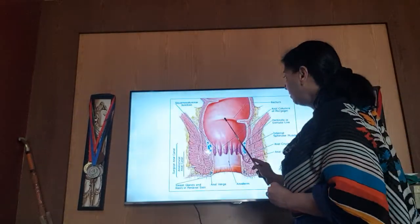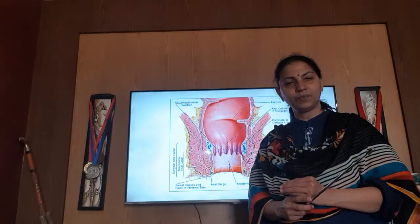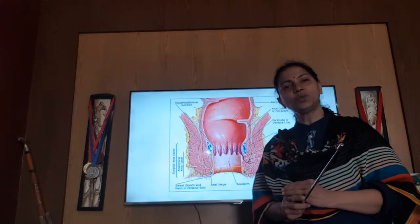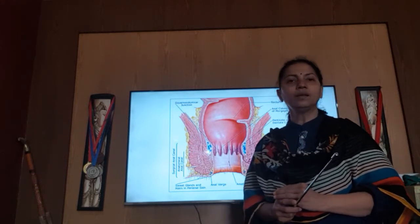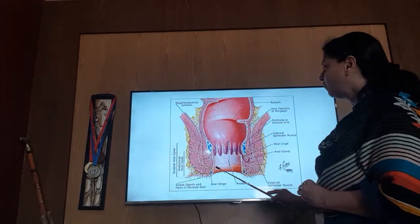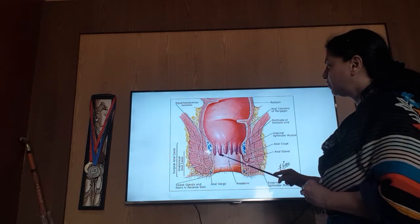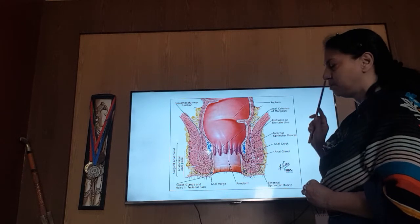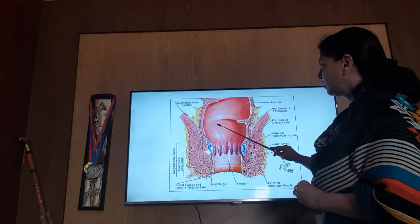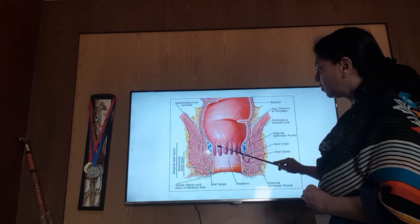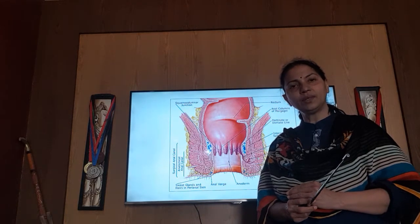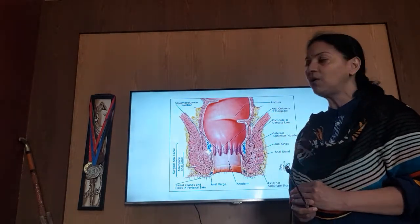Now, the dimensions. Its length is approximately 3.8 centimeters. Because so many structures are present along it, we divide this 3.8 centimeters into three parts: the upper 15 millimeters, middle 15 millimeters, and lower 8 millimeters. In the upper 15 millimeters you can see many columns — these are the columns of Morgagni, or anal columns of Morgagni, present in the upper part of the anal canal.